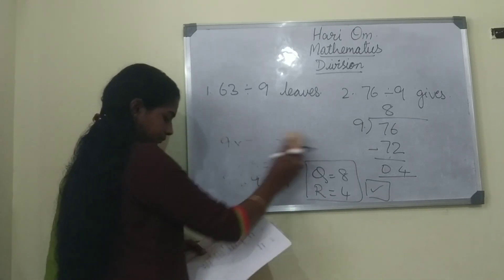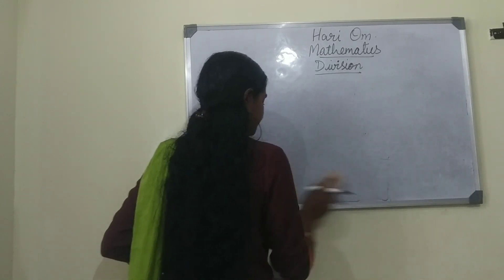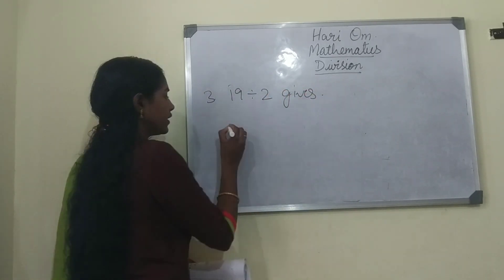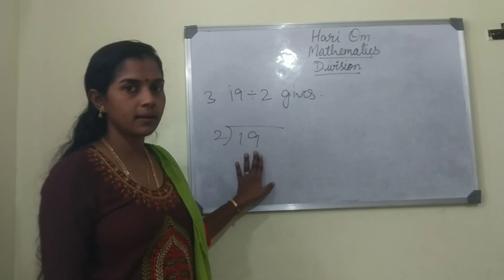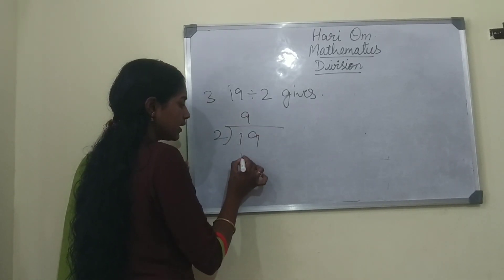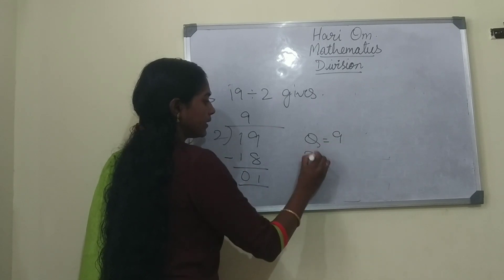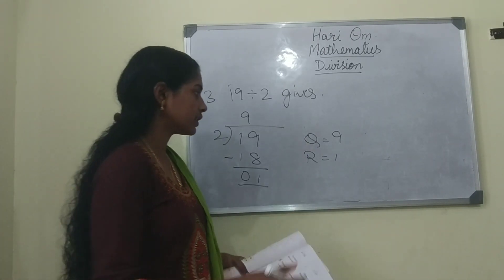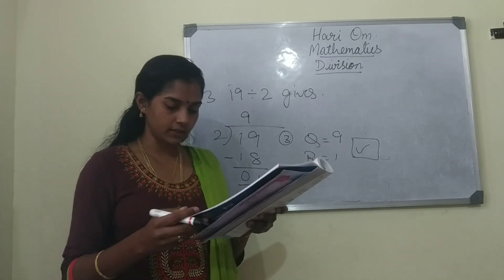Third: 19 divided by 2 gives. So 2 nines are 18, 2 tens are 20. We take 2 nines are 18. Subtract: 9 minus 8 is 1, 1 minus 1 is 0. The quotient is 9 and remainder is 1. So the third option is correct.